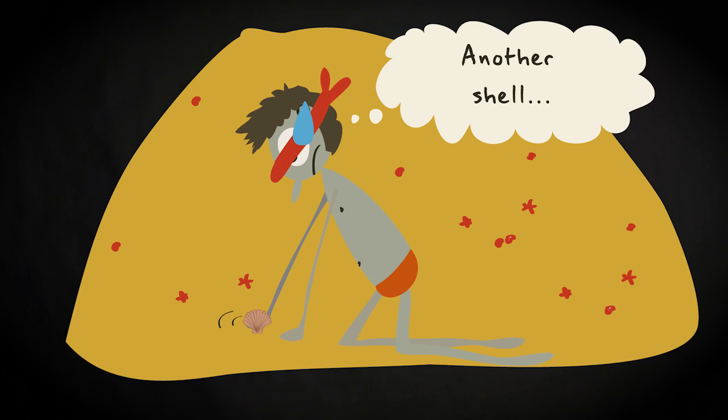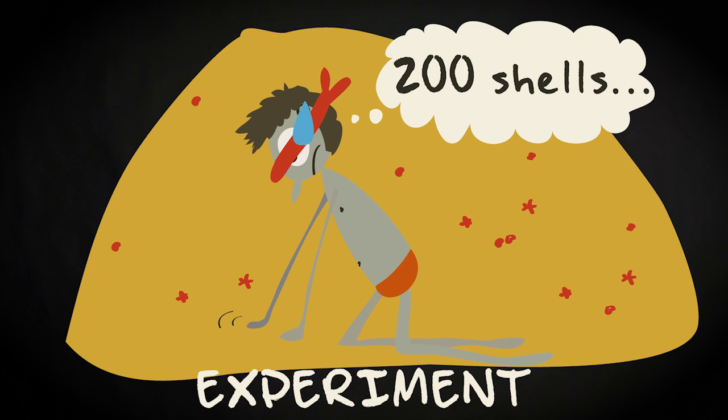Each time you select a new shell at random is considered a small chance experiment, with as possible outcomes shell Q, R, S or T. In probability jargon, the outcome, the type of shell you just picked up, is called an event. And the act of selecting a shell at random is called an independent trial. The whole undertaking of doing many trials is called an experiment.